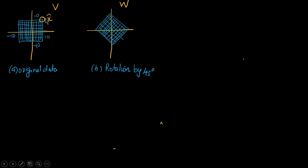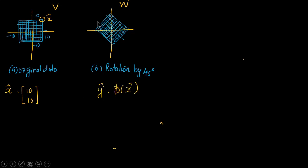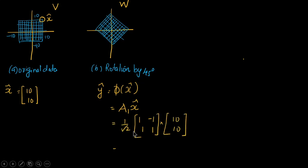As an example, take the corner vector X of the subspace in V, with coordinate position (10, 10). To transform it into W, we compute Y = A1 times X: (1/root2) * [[1, -1], [1, 1]] times [10, 10]. Since cos(45) = sin(45) = 1/root2, factoring out root2 from the matrix, the remaining matrix is [[1, -1], [1, 1]] applied to [10, 10].